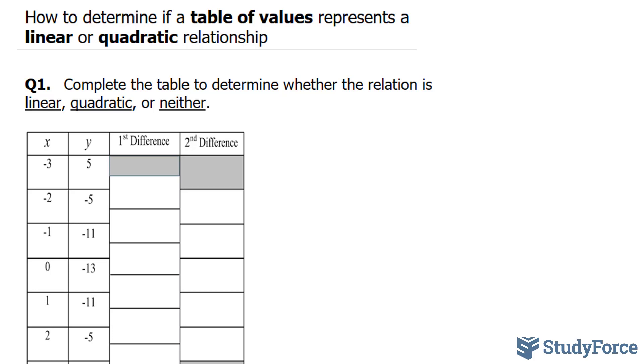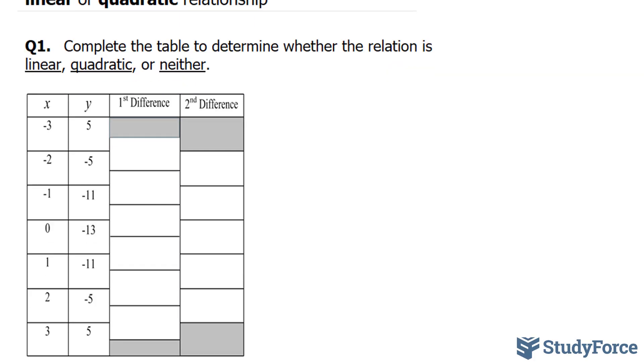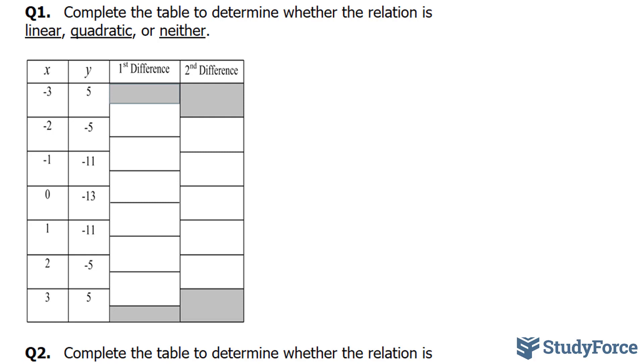The premise behind this is that if the first differences are all the same, then the relation is linear. If the first differences are not the same, then you go on to find the second differences. And if the second differences are the same, then we conclude that it's quadratic.